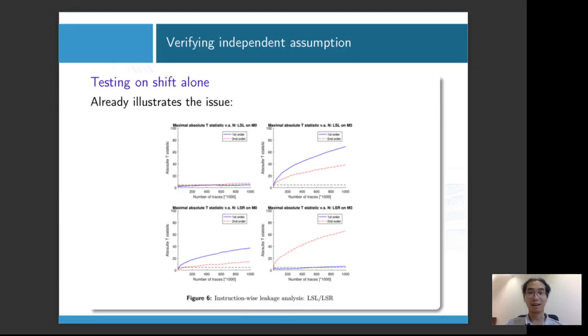In the last sense, we can actually test the instructions alone. There are quite a few that don't really comply with the independent assumption. Here I test the shifter instructions alone. The blue line stands for the first order attack, and the red line stands for the second order attack. If the first order one stands above the second order one, then we say this is not only interaction leakage, but also this leakage will affect your security in practice. So we see it will affect the security in practice for the left shift on M3 and the right shift on M0. For the other two cases, the interaction leakage still exists, but it doesn't really necessarily affect your security in practice.